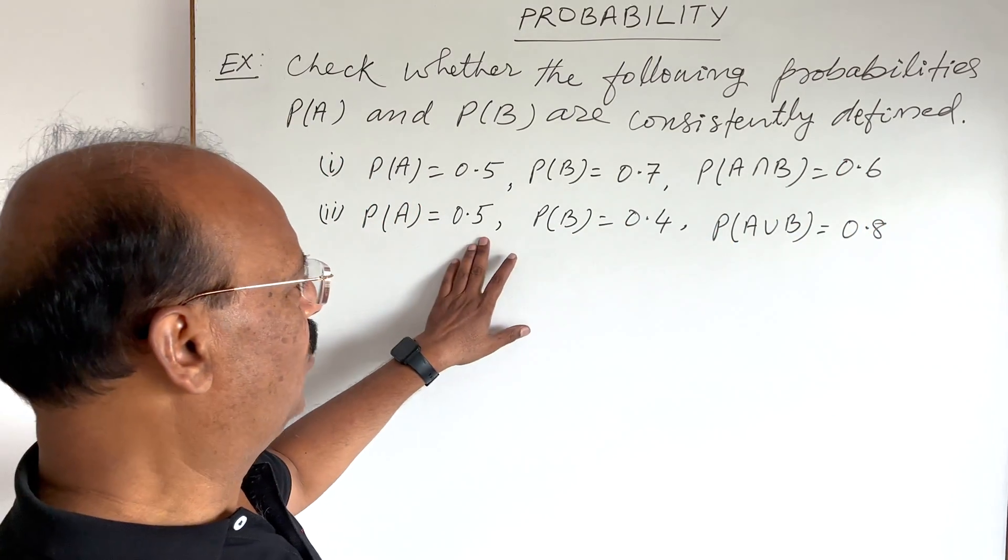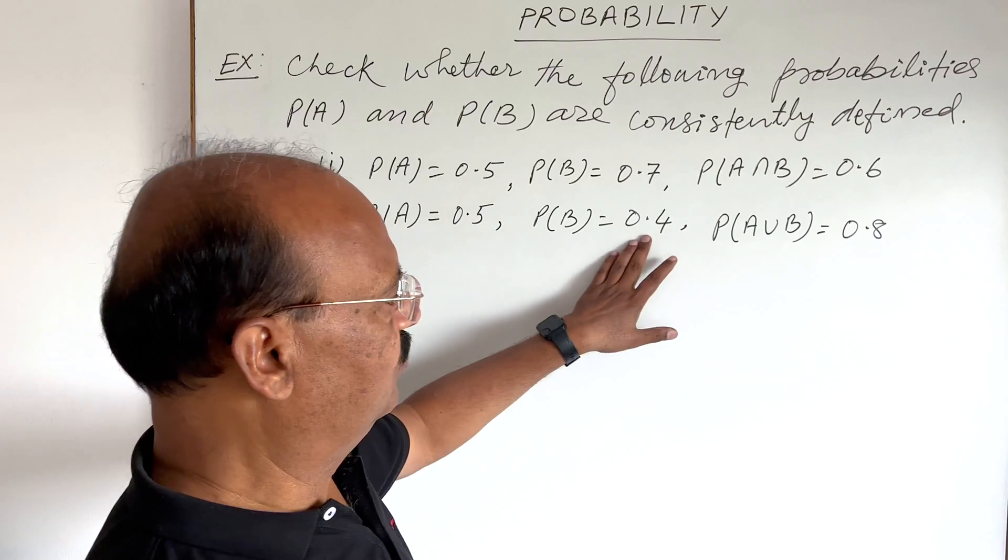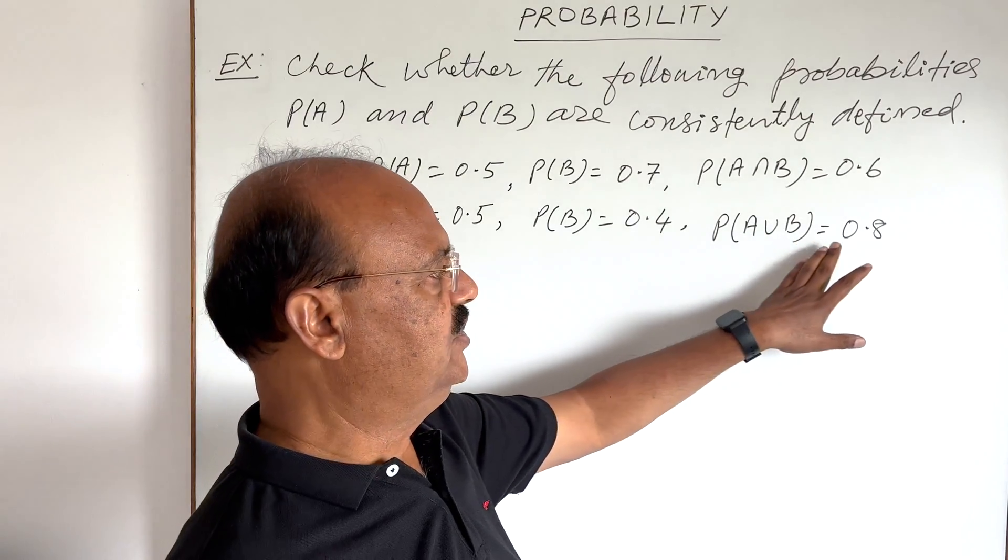Second part, P(A) is 0.5, P(B) is 0.4 and P(A union B) is 0.8.